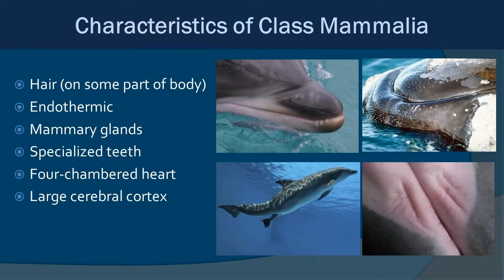Let's go through the specific characteristics of Class Mammalia. First: hair. Most people don't think about hair on a dolphin, but it's there. In the top left picture of a dolphin rostrum, you can see small follicles. Dolphins are born with little follicle hairs that help them find the mammary glands and nurse — they usually lose them after that. Right whales keep bristle-like whisker hairs most of their lives, and manatees also have hair.